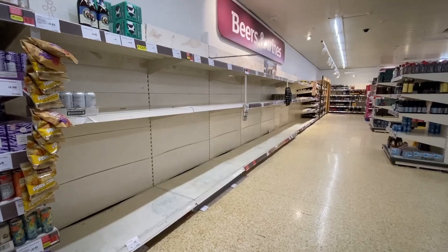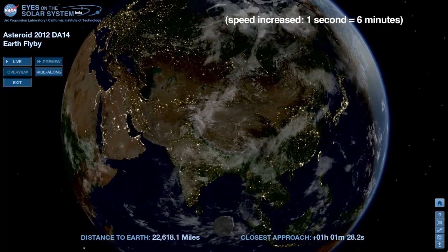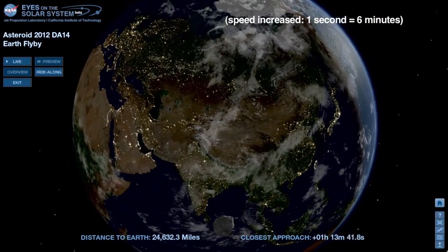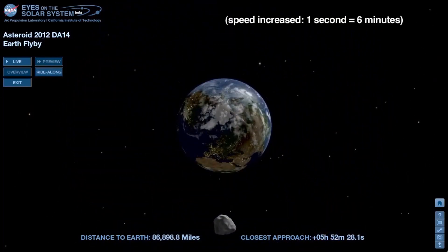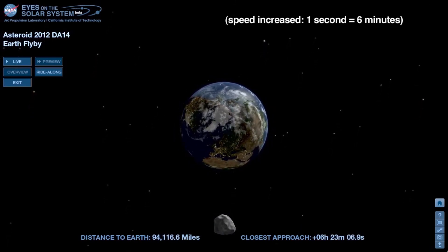Entire ecosystems could collapse. Even smaller asteroids, like the one that exploded over Chelyabinsk in 2013, can cause significant damage. The real question isn't if an asteroid will strike again, but when.